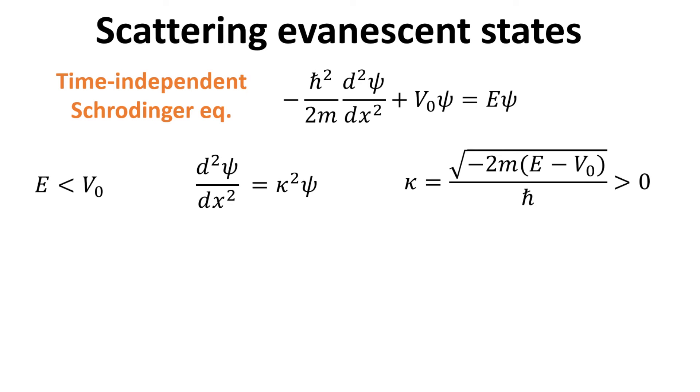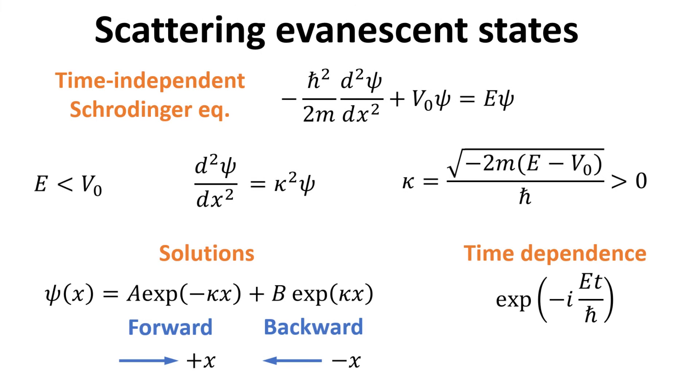When the energy E is less than the potential V, then the scattering states are evanescent. The Schrödinger equation can be written as follows, where κ is defined as a positive real number. Here, the solutions are real exponential functions. The exponential function with complex amplitude A decays as x becomes more positive, while the exponential with amplitude B decays as x becomes more negative.